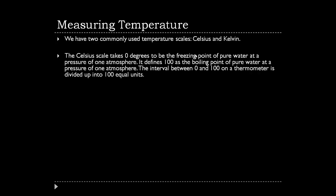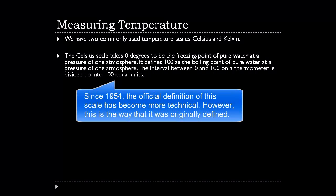So the Celsius scale takes zero degrees to be the freezing point of pure water at a pressure of one atmosphere. So that's at sea level. It defines a hundred as the boiling point of pure water at a pressure of one atmosphere. And the interval between zero and a hundred on a thermometer is divided up into a hundred equal units.